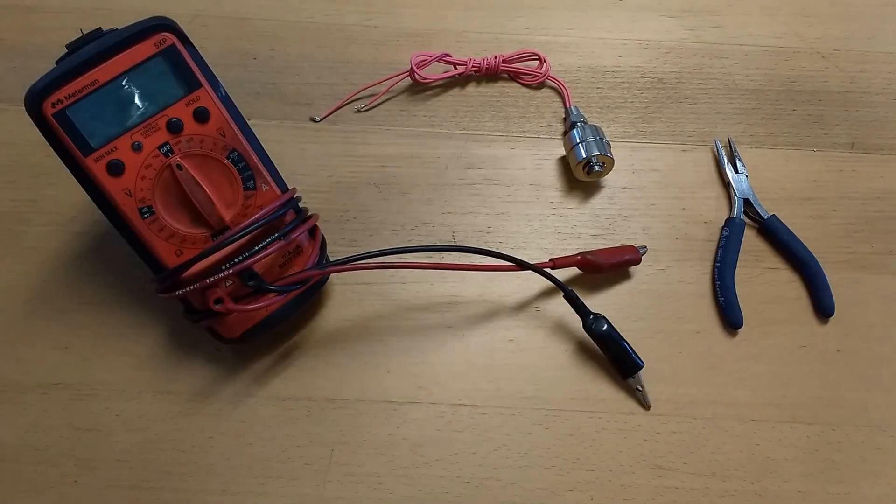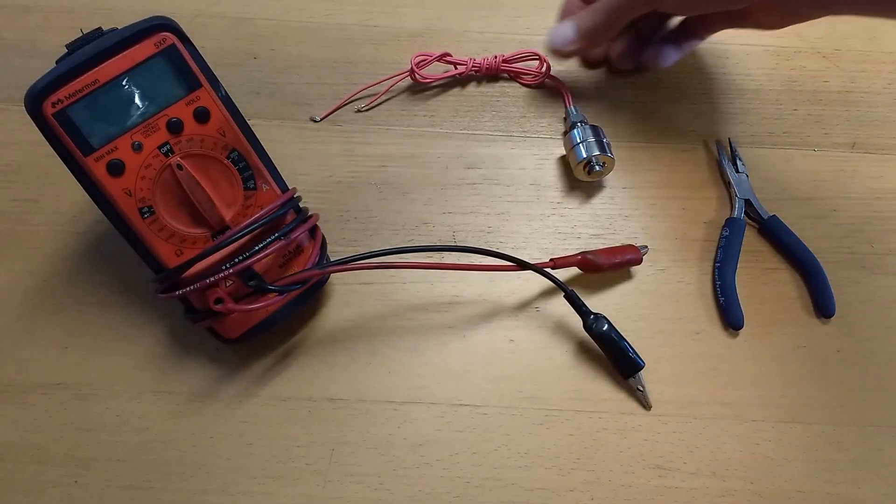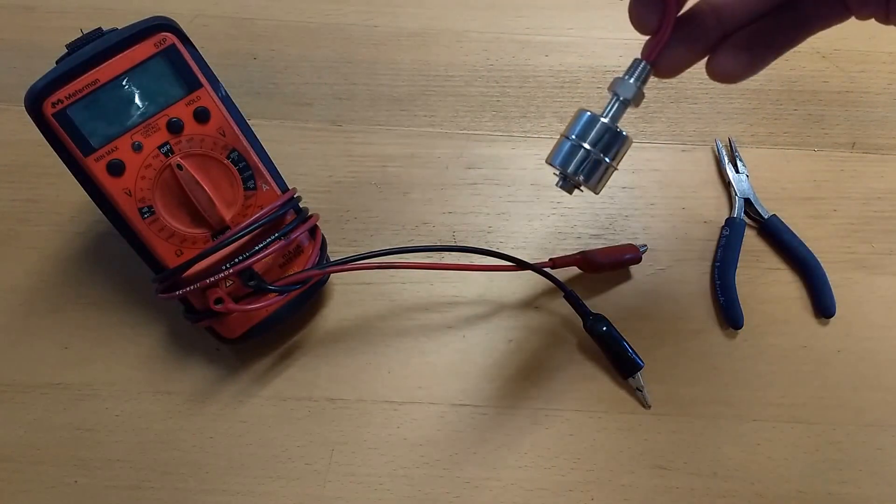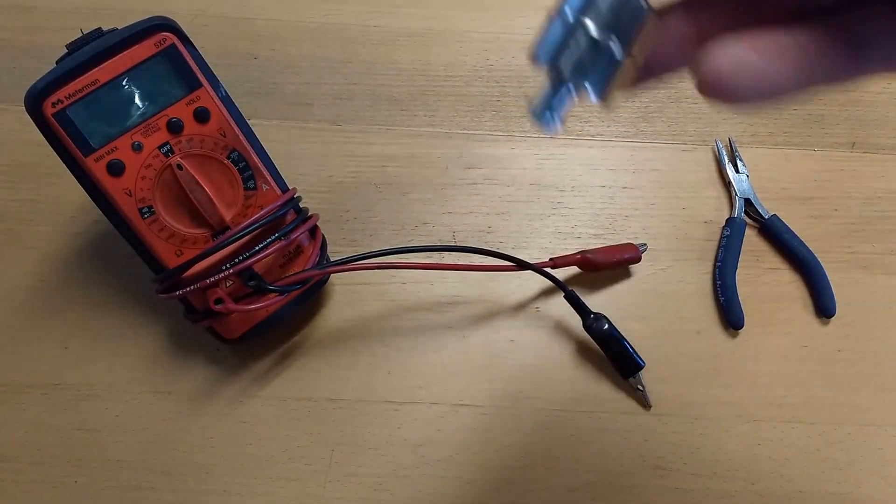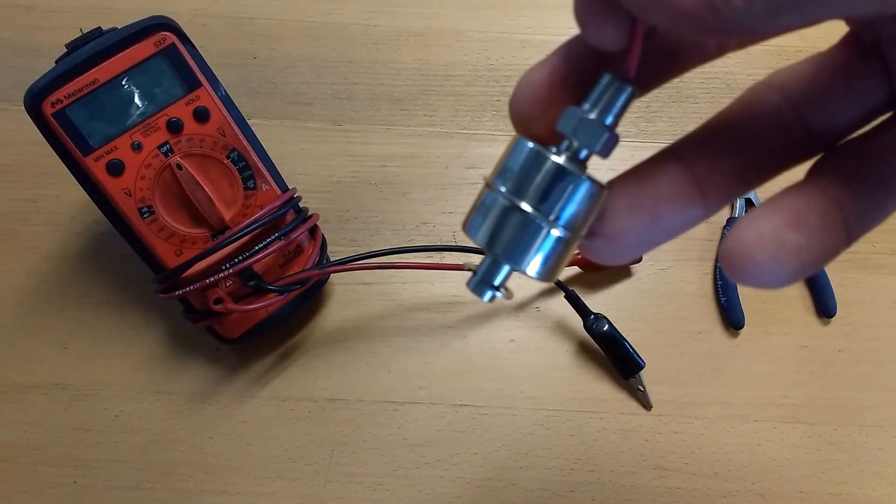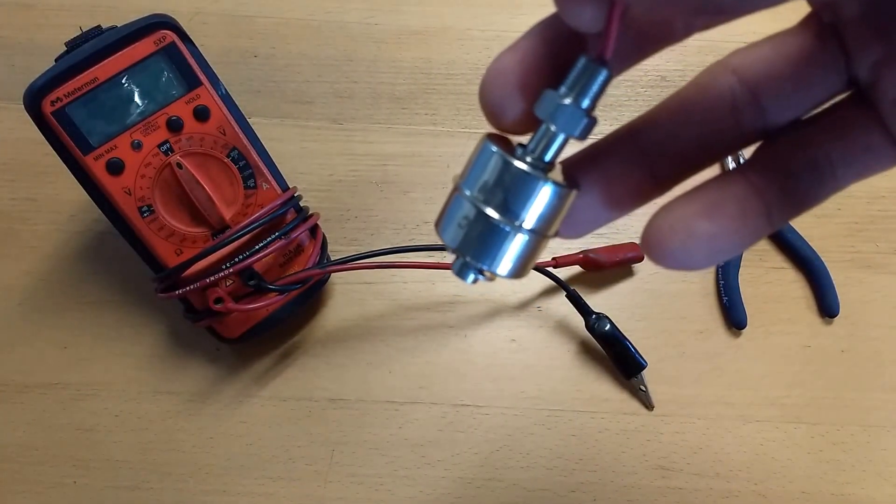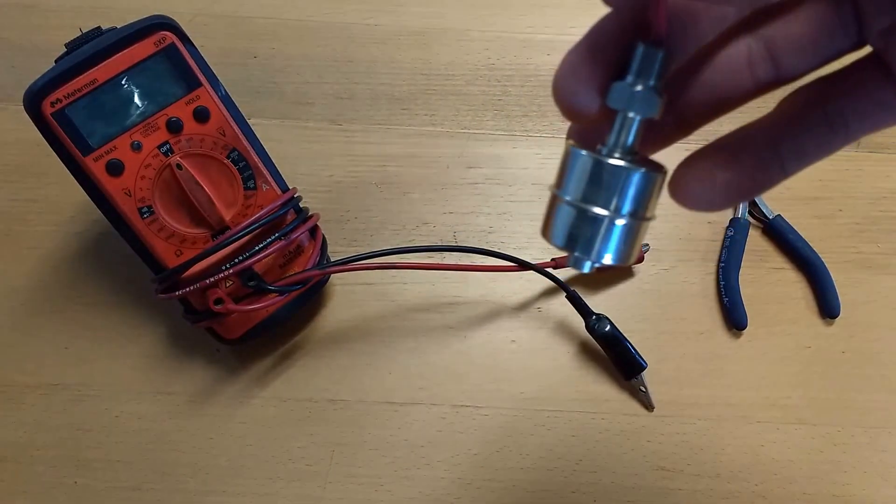I'm going to show you how to change a float switch from normally open to normally closed. Here you have your standard float switch. The float is marked NO or NC, indicating normally open or normally closed.